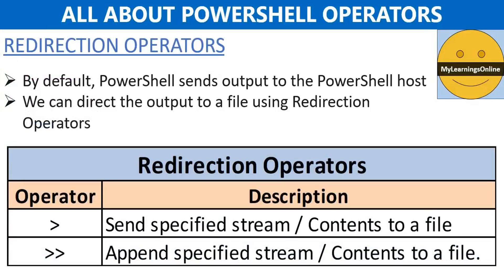Next is redirection operators. By default, PowerShell sends the output of a command or expression to the PowerShell host, meaning the console. But we can use redirection operators to send the output to a text file. The single angle bracket writes output to a file, and the double angle bracket appends output to a file.